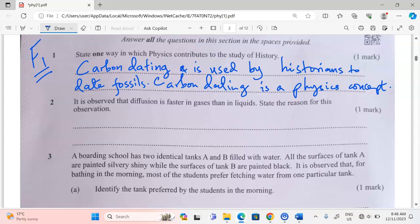Number two now. It is observed that diffusion is faster in gases than in liquids. State the reason for this observation. It is observed that diffusion is faster in gases than in liquids. It's very true that gases diffuse faster than liquids or than even any other state of matter.